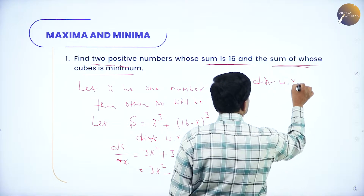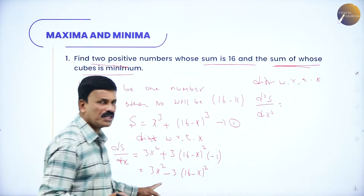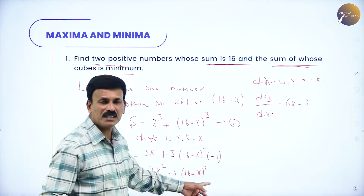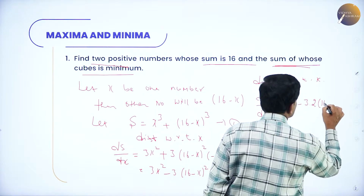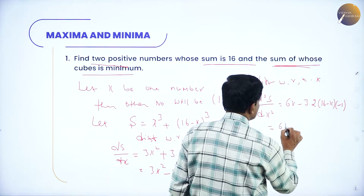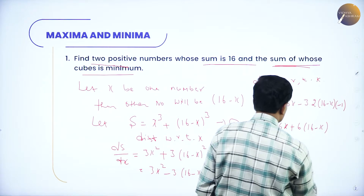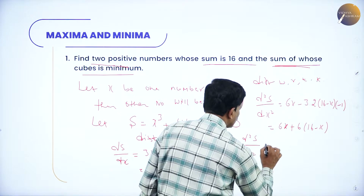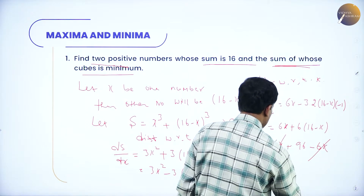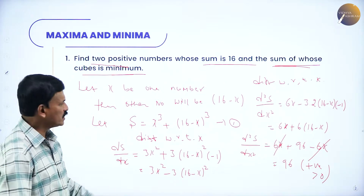Differentiating again with respect to x, d²s/dx² equals 6x minus 3 times 2(16 minus x) times (minus 1), which simplifies to 6x plus 6(16 minus x). Multiplying out: 6x plus 96 minus 6x equals 96. Since d²s/dx² equals 96, which is positive and greater than 0, the function is minimum.